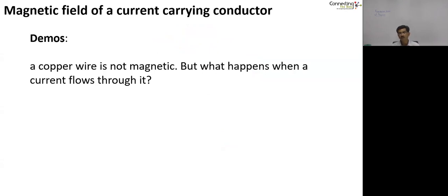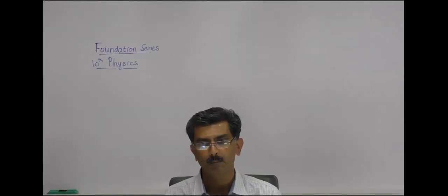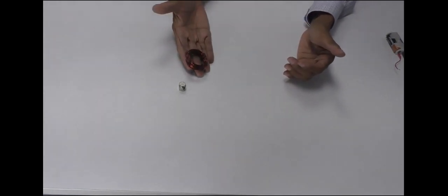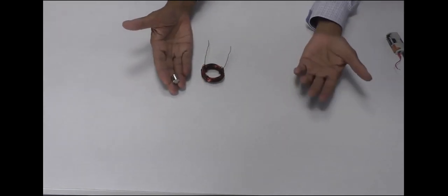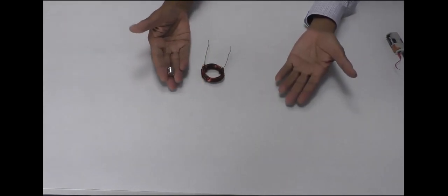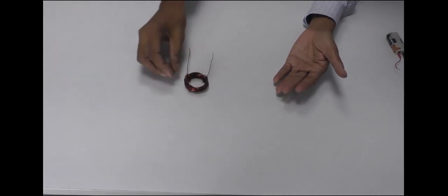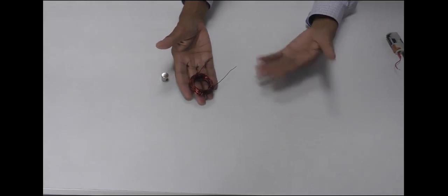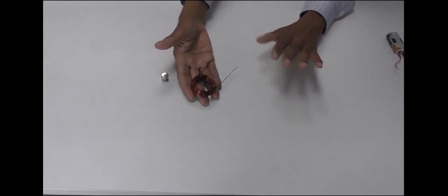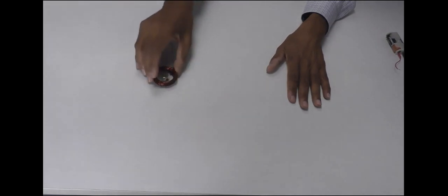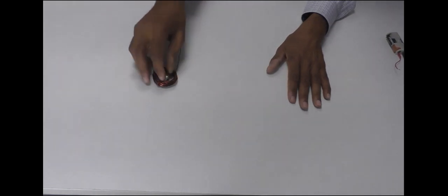Let us start the discussion with a demonstration and then there will be a series of questions that we will try to answer. Copper wire — copper — is not a magnetic material, which means it is not attracted by a magnet. I have a fairly powerful magnet in my hand; these are neodymium magnets, but it has absolutely no force of attraction on a piece of copper. Copper is an excellent conductor of electricity, but it is not a magnetic material, so there is no force of attraction between the copper wire and the magnet.